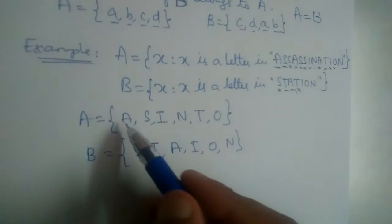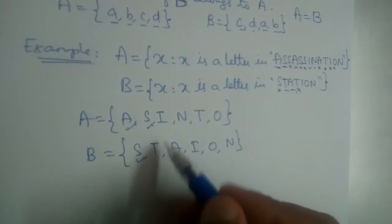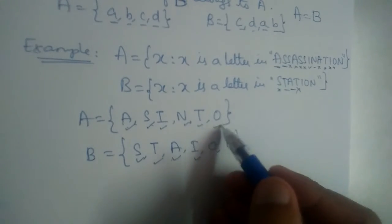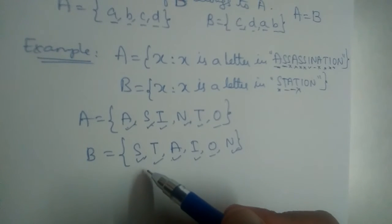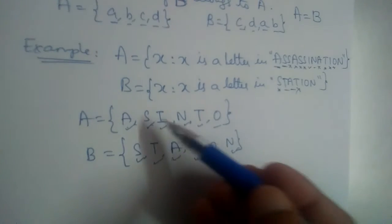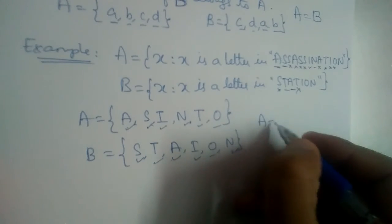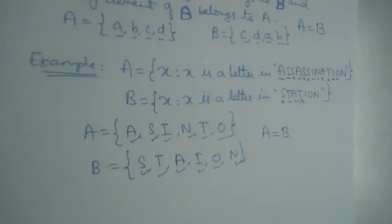Let us check whether these two are equal or not. See, A is here, yes, S is here, I, N, T, and O. Every element of set A is also present in B, right? And every element of B is present in A. So these two are equal, right? A equals B. I hope you understood the concept of equal sets.